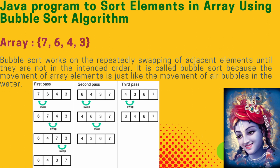In the second pass we perform the same process. We take the first element, 6, and compare it with the second element, 4. As 6 is greater than 4 we swap. Again we compare 6 with 3; 6 is greater than 3, so we swap. Then we compare 6 with 7; 6 is not greater than 7 so we don't swap. Now 6 is placed to the right side, so the last two elements are sorted.